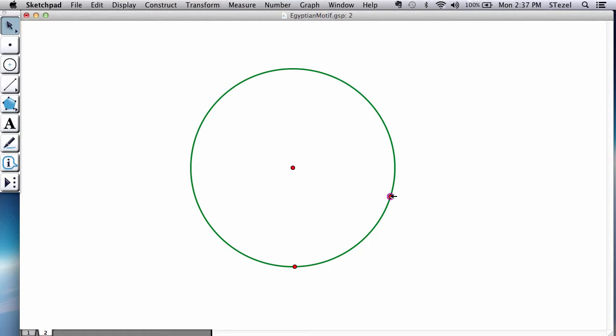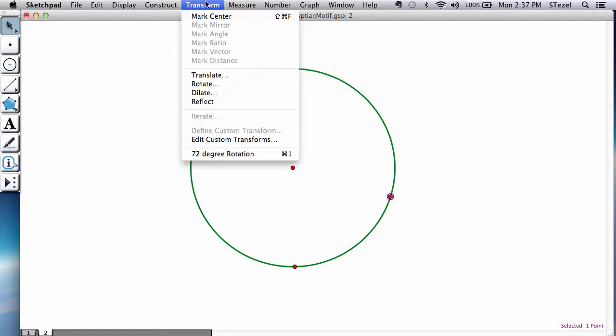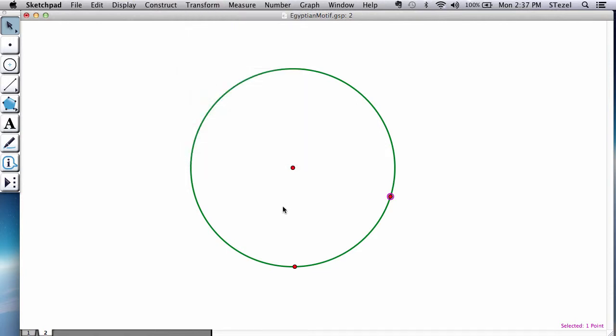So once you have that, you could now go to transform. Use your 72 degree rotation. Observe there's a shortcut, Apple 1, in the case of if you're using a Mac. So I'm just going to continue 1, 2, 3, 4, and 5. And you create your pentagon.